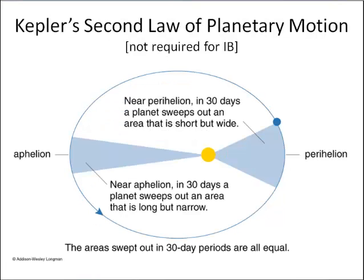Kepler's second law: he recognised that if we look at the area within a planetary sweep over 30 days' duration, and compare that to the area of another 30-day duration, we find that the areas are equal. So that's the second rule which Kepler came up with.